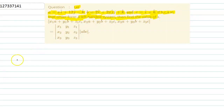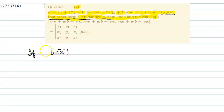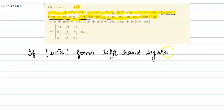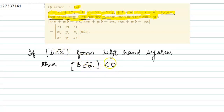So, if b, c, a in that order form the left-hand system, then the box product [b, c, a] is less than 0 — this is a negative number. The scalar triple product of b, c, a is less than 0 if they form the left-hand system.